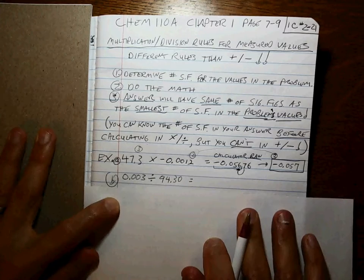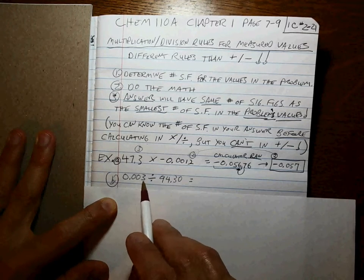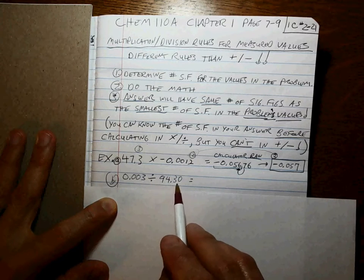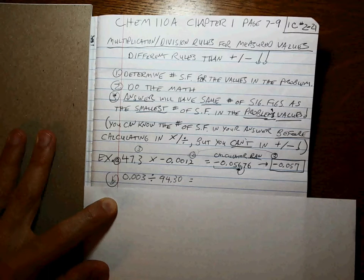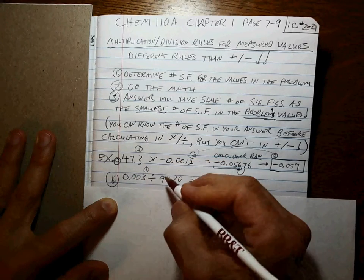Let's take another look at a different problem: 0.003 divided by 94.30. I know how many sig figs are in my answer already. I already know. Because this number has 1 sig fig.